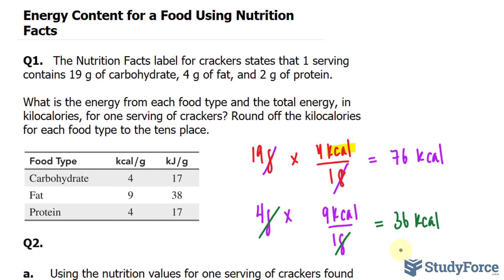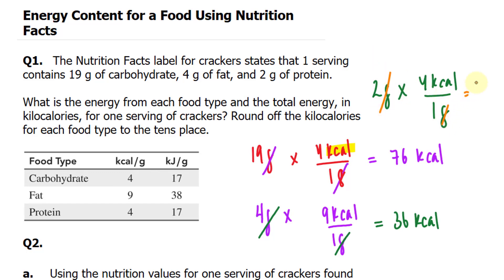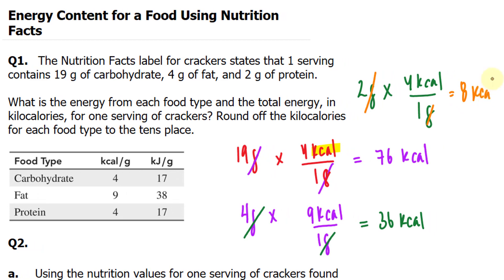Finally, proteins, that's equivalent to carbohydrates according to this table. We have 2 grams of protein times 4 kilocalories per 1 gram. Notice this will cancel out, leaving us with 8 kilocalories.